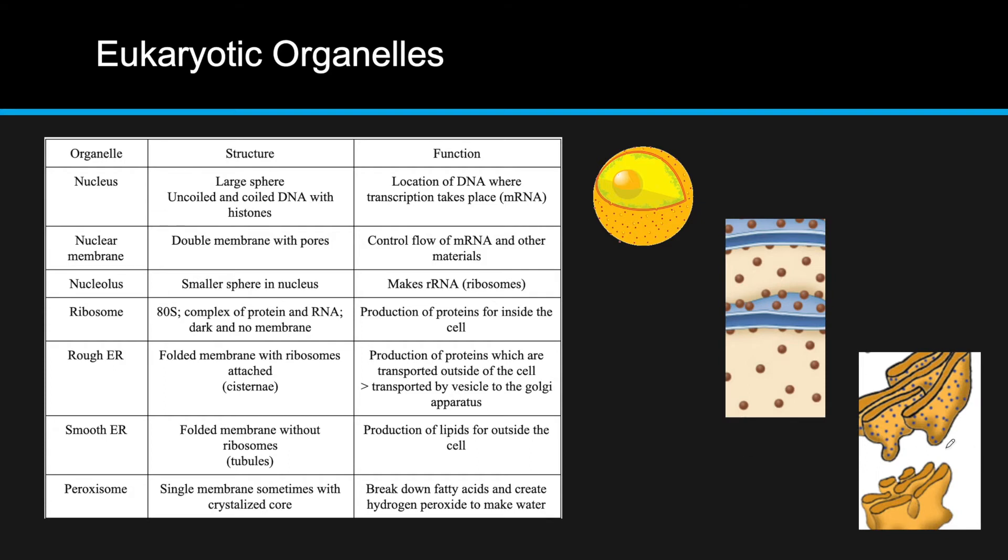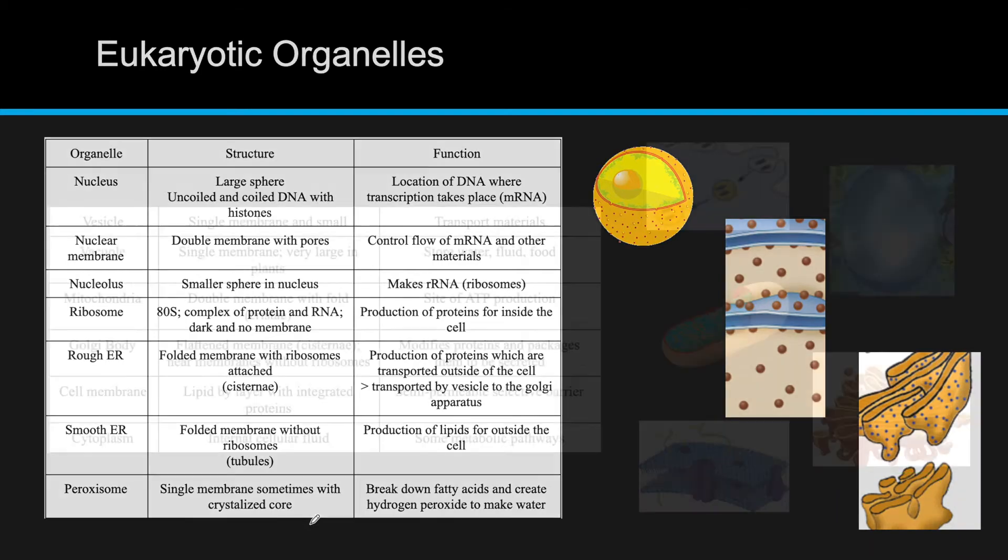So, over here, we have the smooth ER compared to the rough ER. This is also a folded membrane, and this is for the production of lipids for outside of the cell. This doesn't come up too much, but this is a peroxisome. And what it does is it basically breaks down fatty acids and creates hydrogen peroxide to make water.